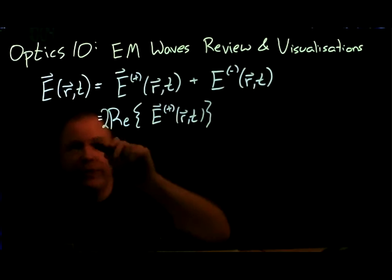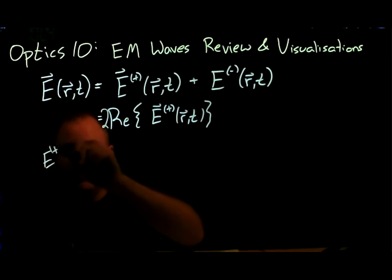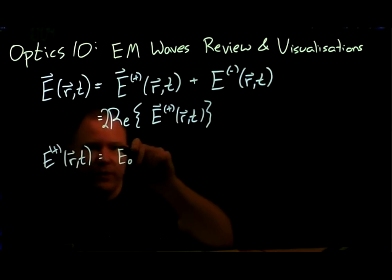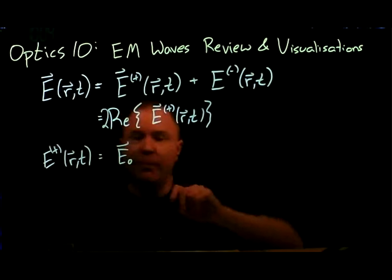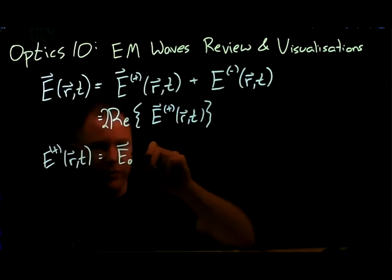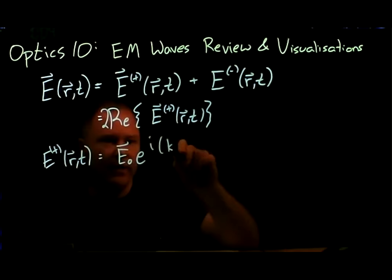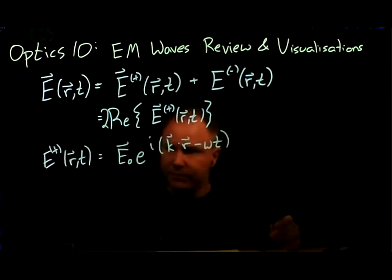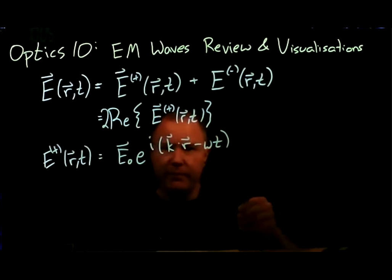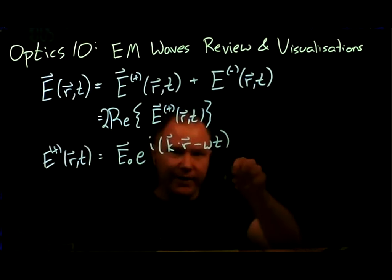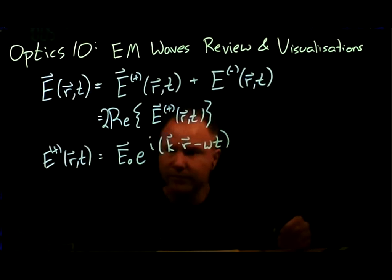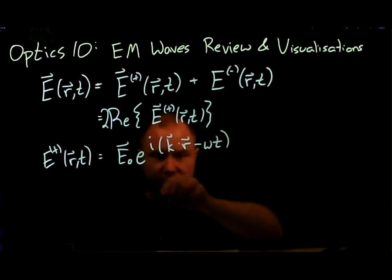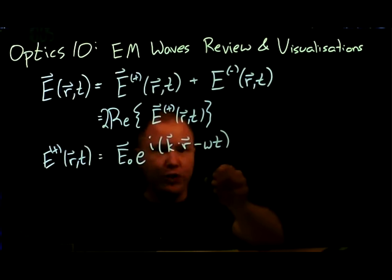For plane waves, E-plus of r and t equals some constant — which can actually be a complex number — times e to the i(k·r − ωt). Remember the plus comes with a positive spatial component and a negative time component. The reason the constant can be complex is that's how we encode the phase of this wave at the origin at t equals zero.